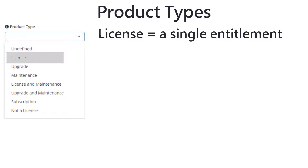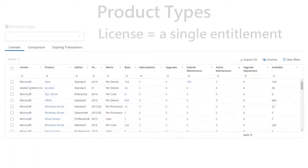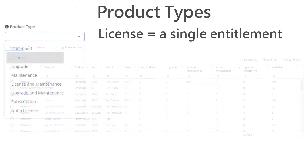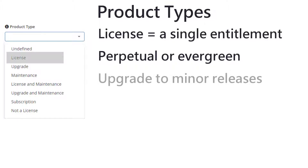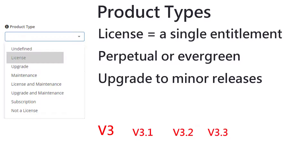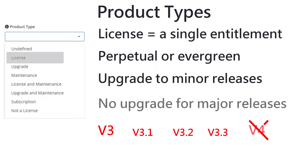License corresponds to a single entitlement for a specific version of a specific software title and adds one to the base column on the licenses data grid. This entitlement lasts forever and is sometimes called a perpetual or evergreen license. If you buy a license for Vantosi version 3, you can use Vantosi version 3 forever. Typically, but remember to check, you can upgrade to new minor versions or dot versions — from version 3 to 3.1, 3.2 and so on — and install patches, but you are not allowed to upgrade to version 4.